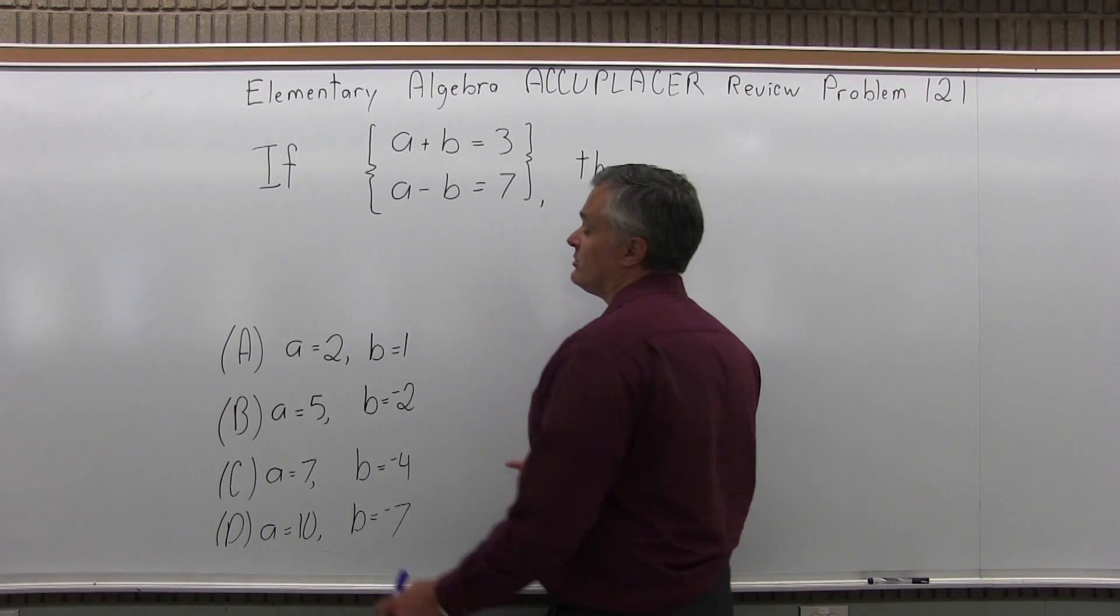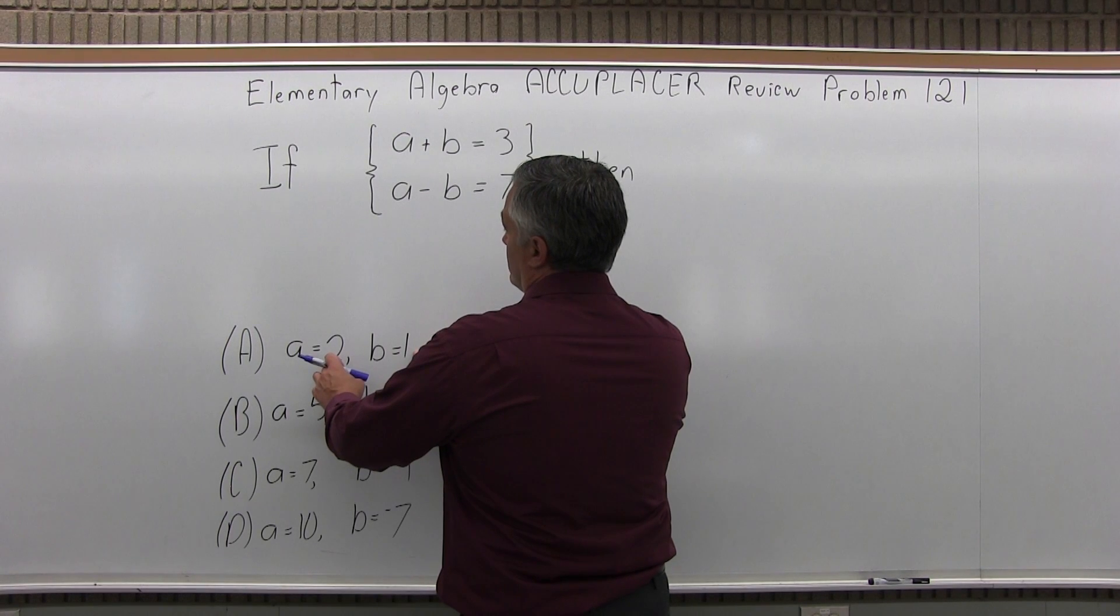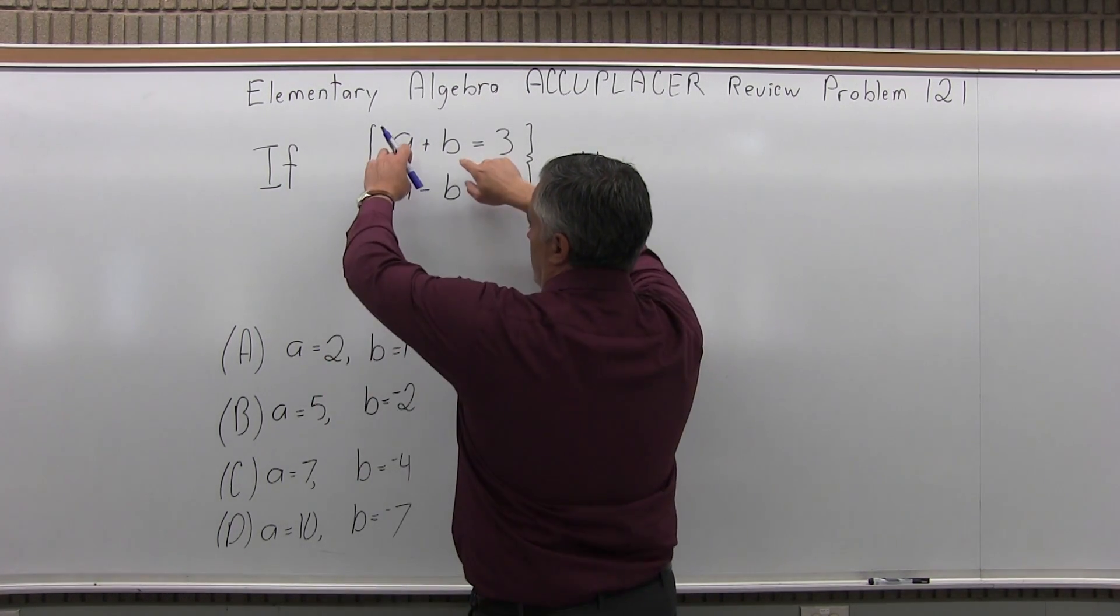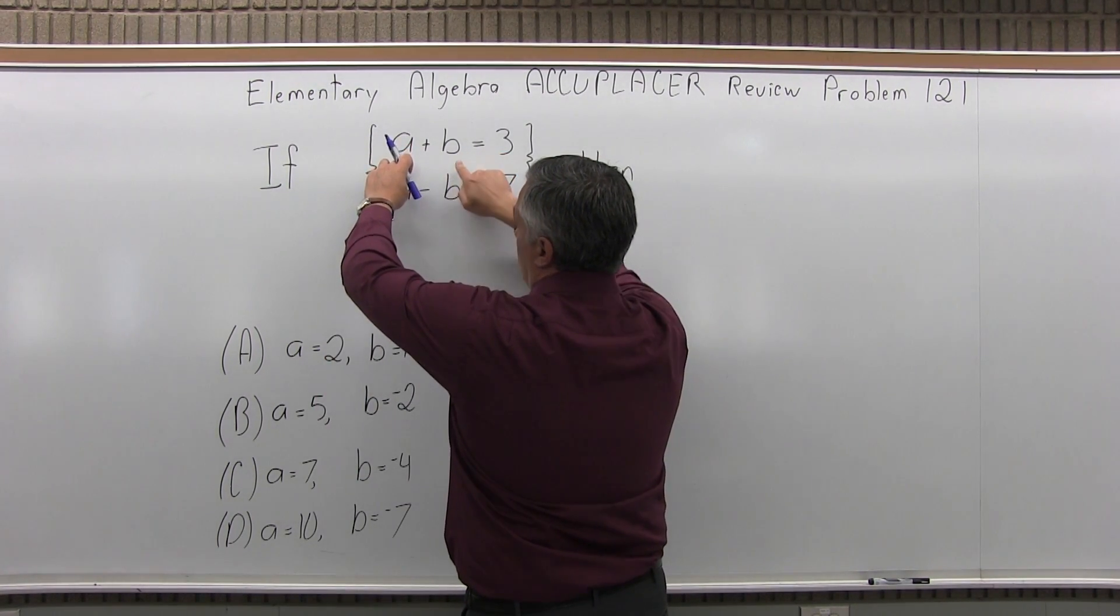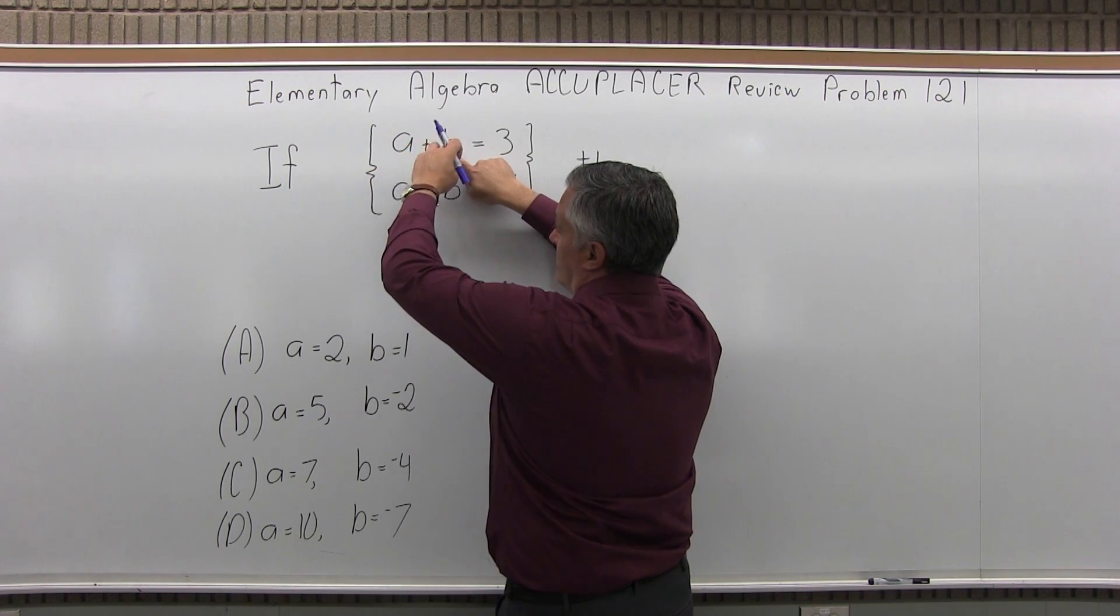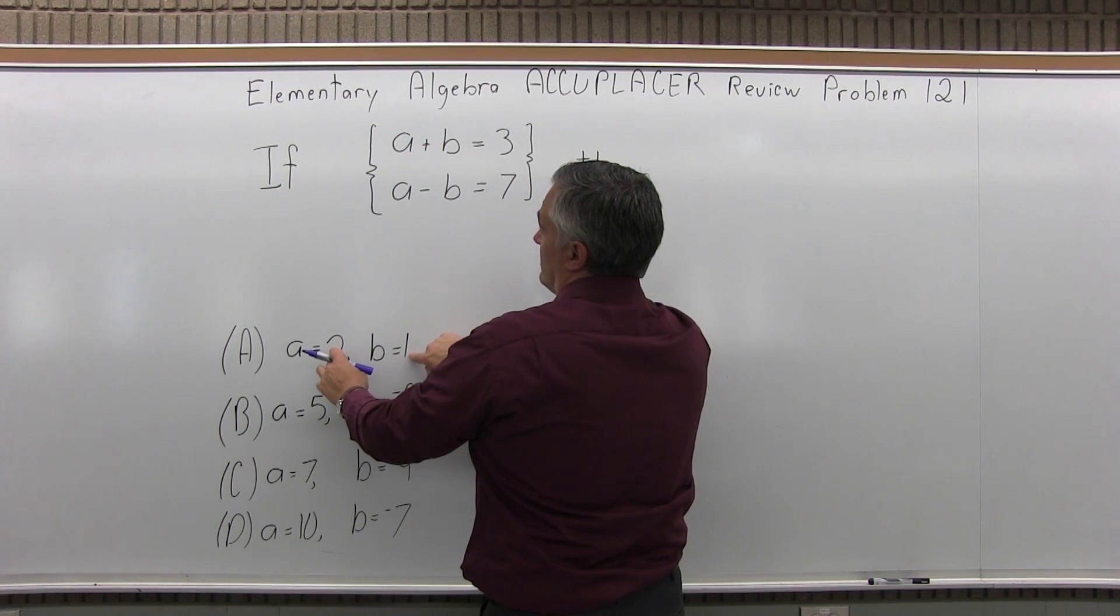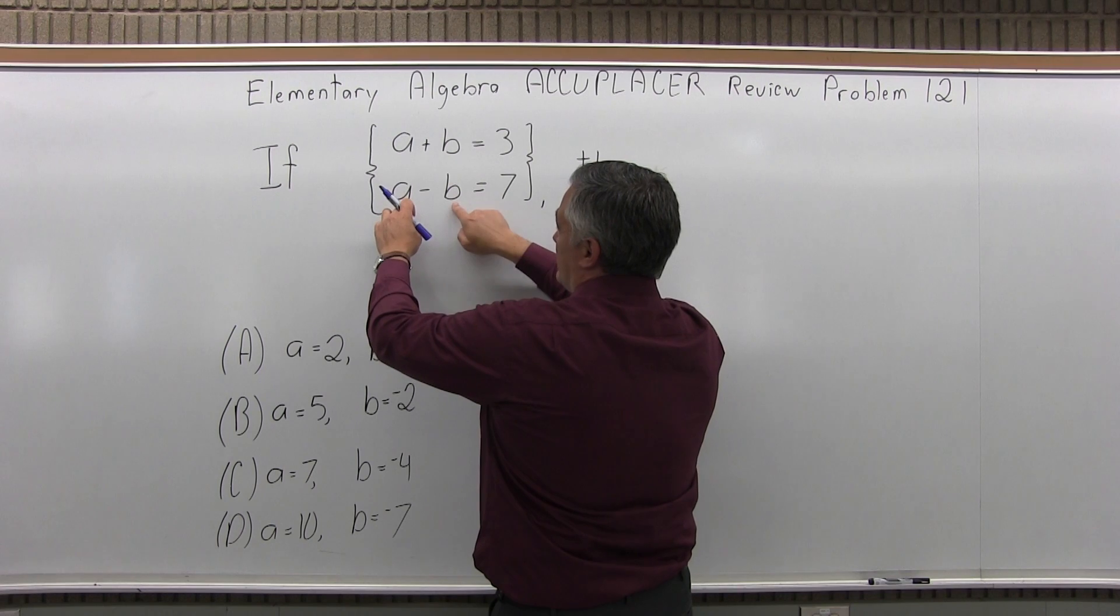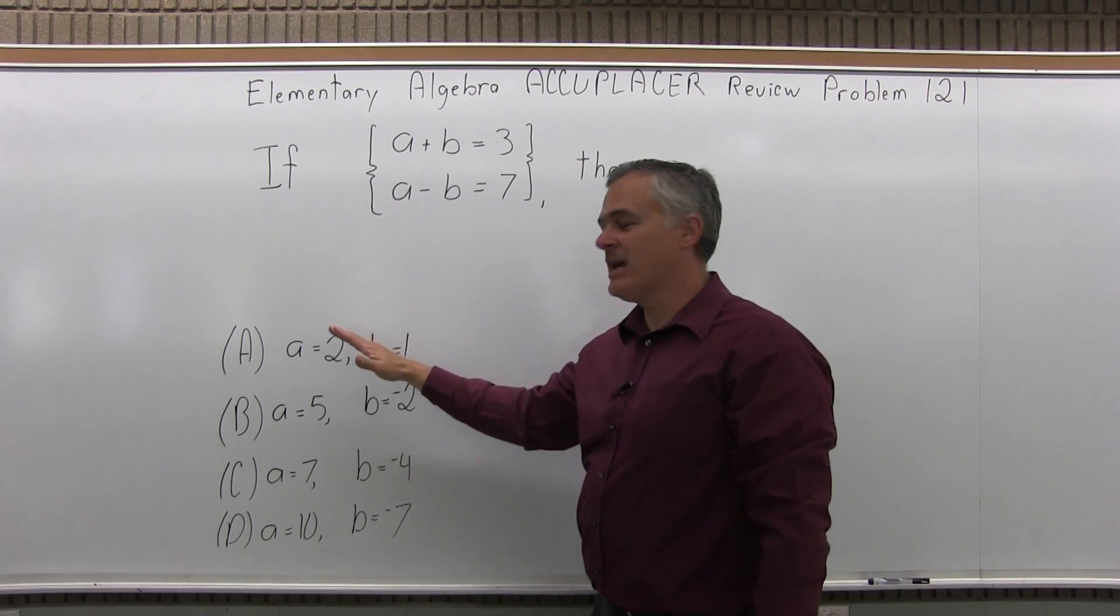You can use some trial and error and plug in the values of A and B given in each option and see if it makes it true. If A is 2 and B is 1, 2 plus 1, 3 equals 3. If A is 2 and B is 1, 2 minus 1 equals 7, that's not true. So it can't be A.